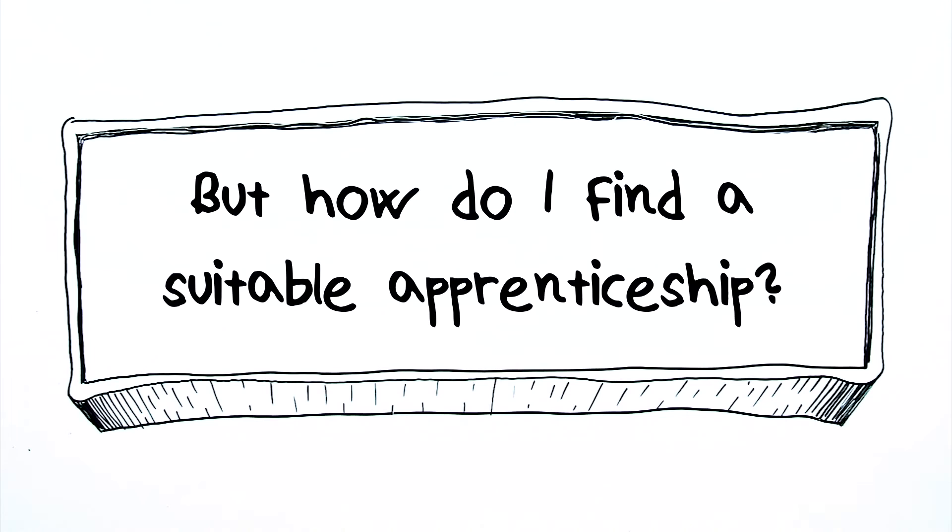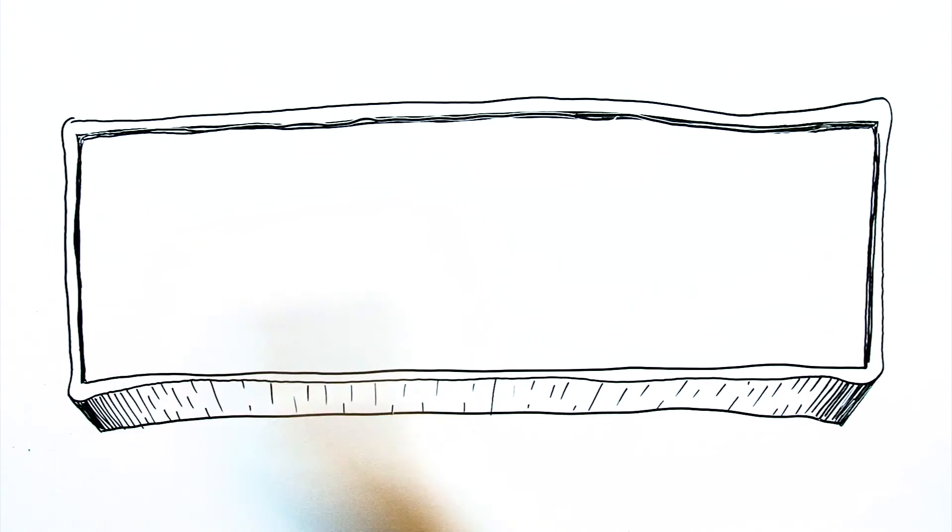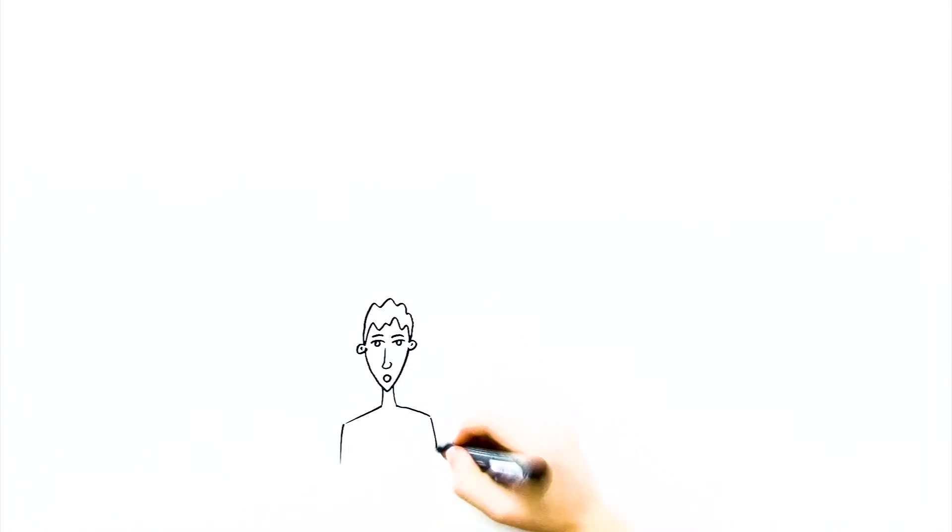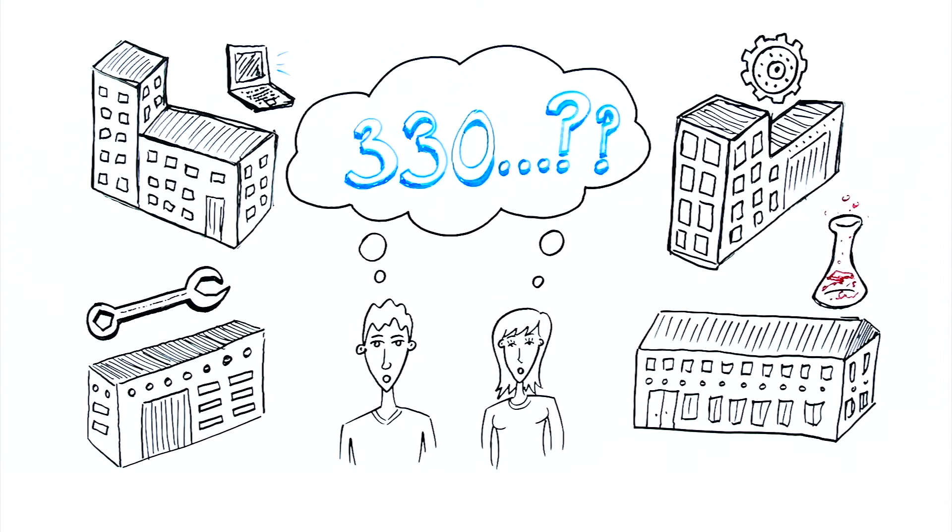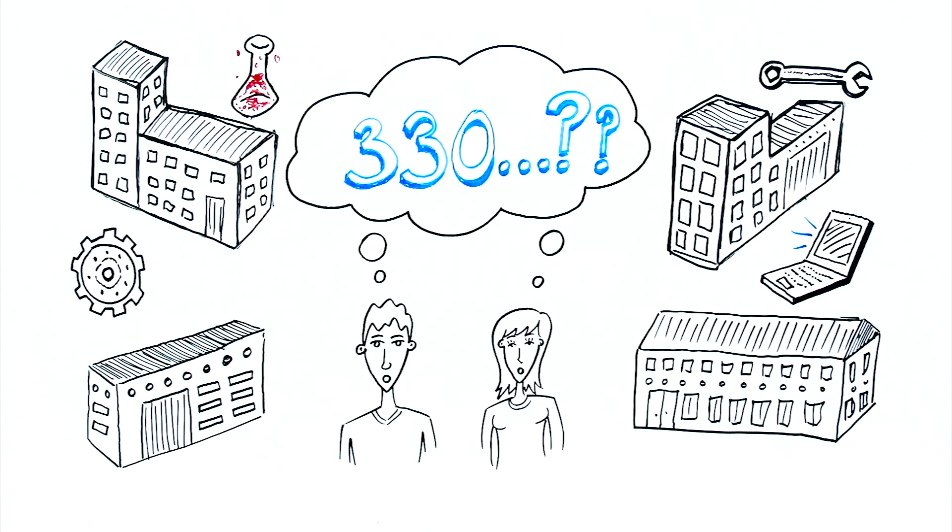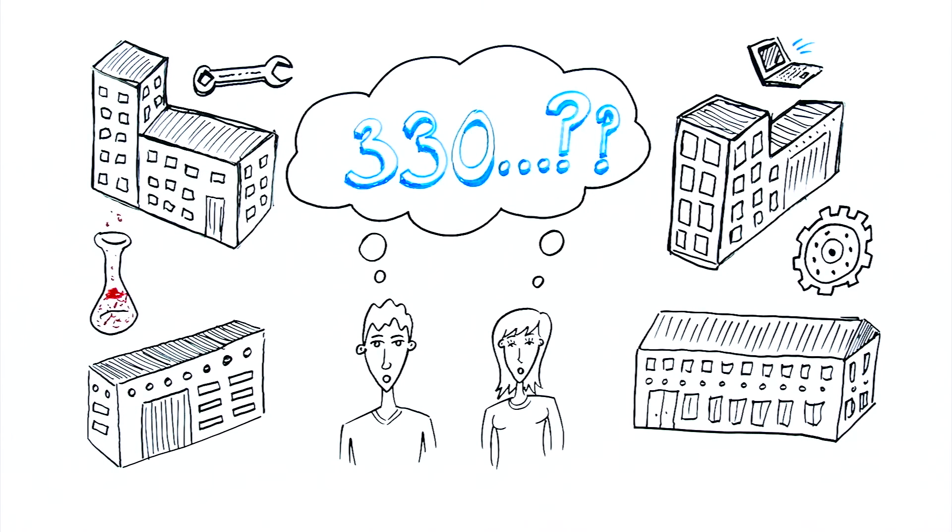But how do I find a suitable apprenticeship? In Germany there are over 330 apprenticeships in many different areas. On www.arbeitsagentur.de you can find tips to help you in your search for a suitable apprenticeship.